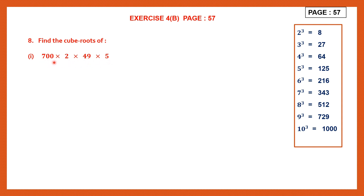First, what we're going to do is find the prime factors of 700. Let's write down 700 and find the prime factors. You can start with 5 — 5 ones are 5 and there's 20 left. 5 fours are 20. You can continue with 5. Now whenever numbers are ending in 0 or 5, you can use 5.